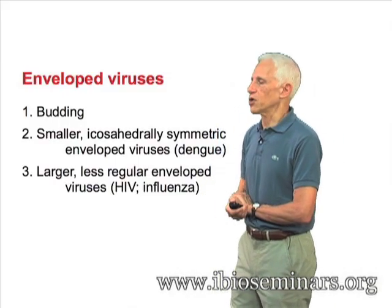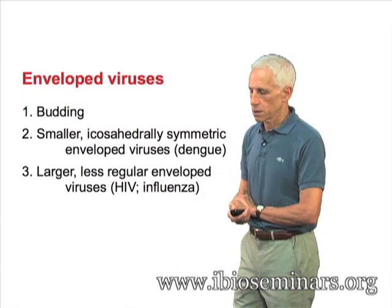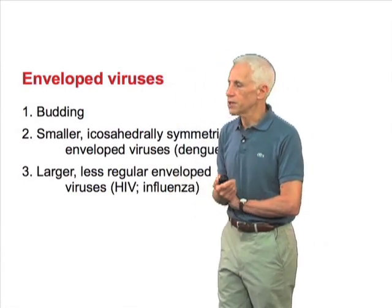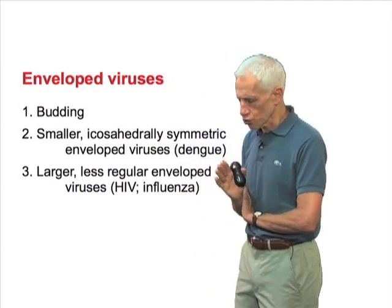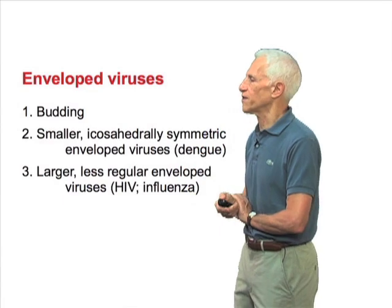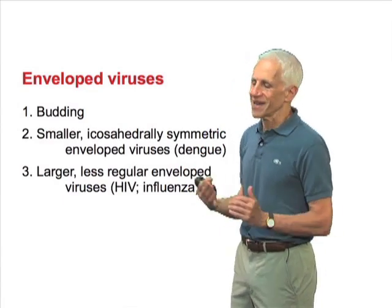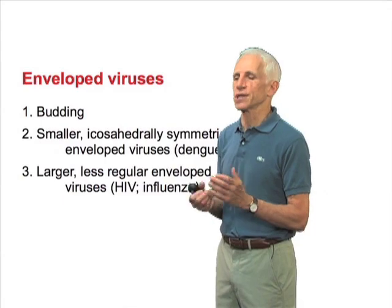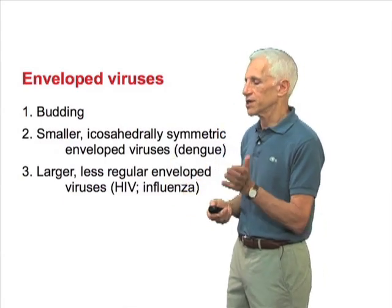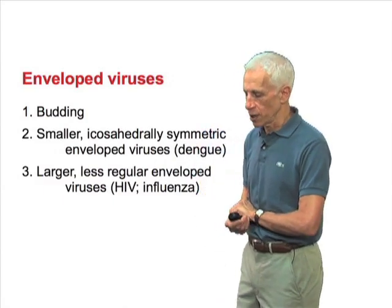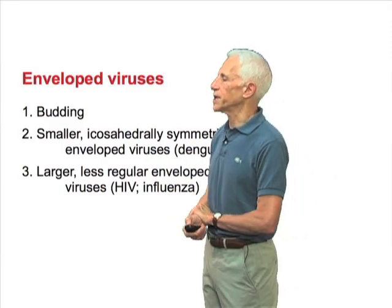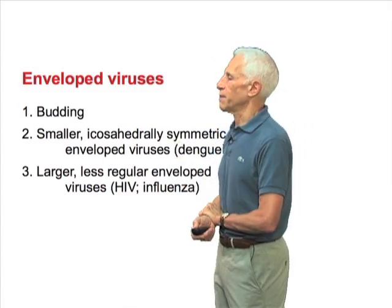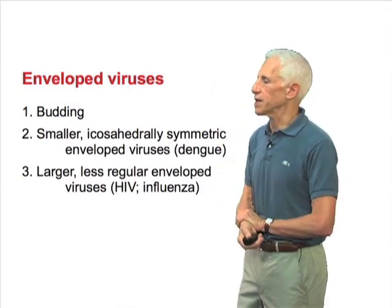Let's talk about enveloped viruses. Enveloped viruses acquire their envelope — their membrane — in general, though not true of all but almost all of them, by budding out of the cell, either out of the cell surface or into an intracellular compartment such as the endoplasmic reticulum or the Golgi apparatus, and then being transported out. In that budding process, they wrap themselves in a membrane derived from host cell lipids.